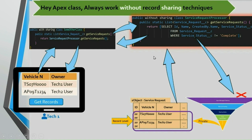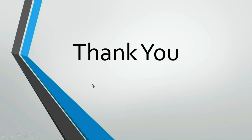To reiterate one more time: all the keywords we have discussed — with sharing, without sharing, omitted sharing, and inherited sharing — are related to record level access. For field level and object level security, we have other keywords that we will discuss in another session. In the next session, we will see all these combinations in a demo with a sample application. Thanks for watching, and we will meet in the next session.